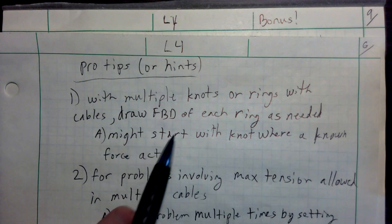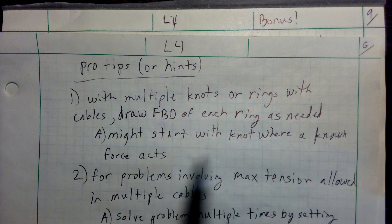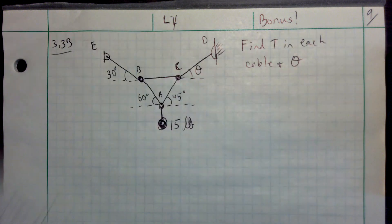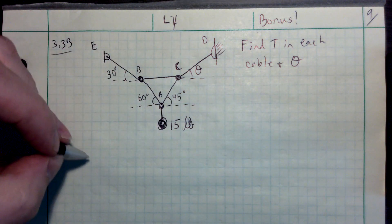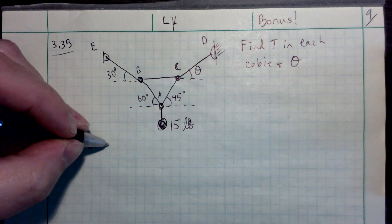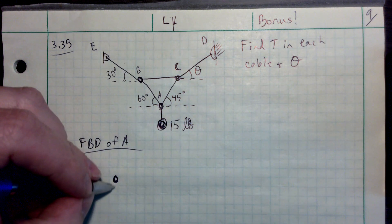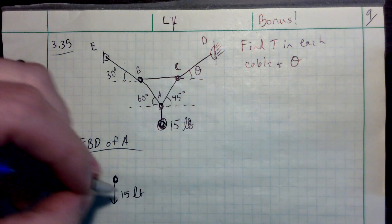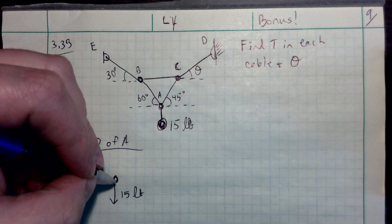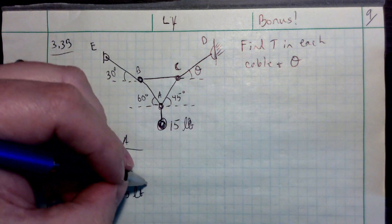If you remember from my pro tips earlier, you're going to have to draw multiple free body diagrams. A good place to start is if you have a known force acting on a particular knot. I have a known force right here — a weight of 15 pounds acting on A — so if I draw a free body diagram of A to start with, I've got a 15-pound force going straight down. I've got AC and AB, which both have X and Y components. I'm going to start with AC.